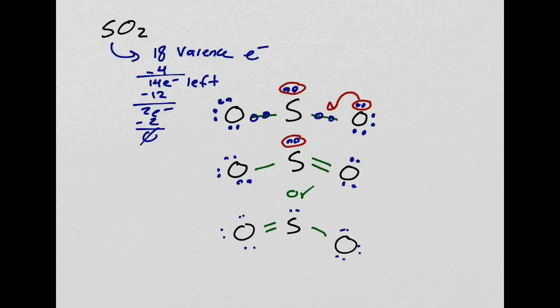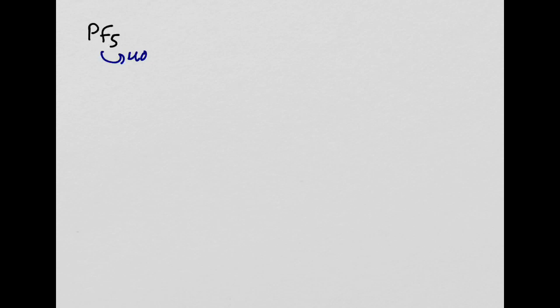Last practice problem: PF5. The total number of valence electrons is 40. Phosphorus goes in the middle; put the five fluorines around it. Draw a bond between the center atom and each surrounding atom. Each covalent bond has two electrons, so with five bonds I've put down ten electrons already, leaving 30 electrons to account for.